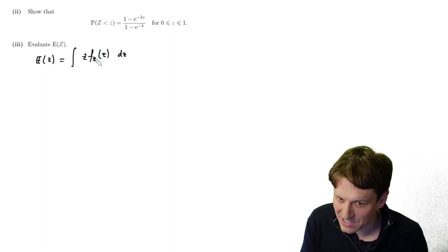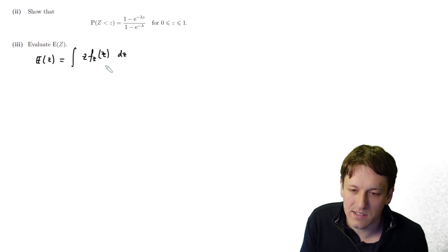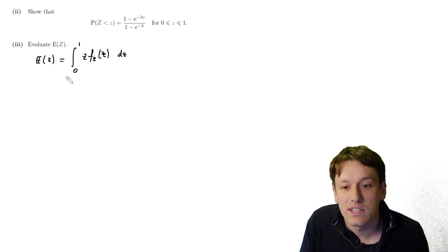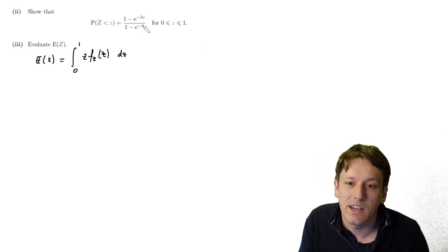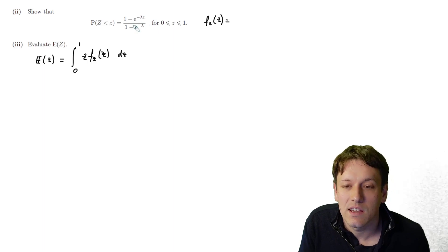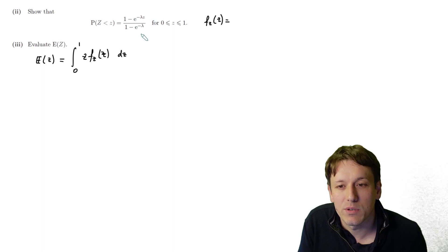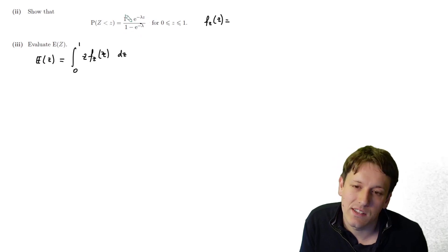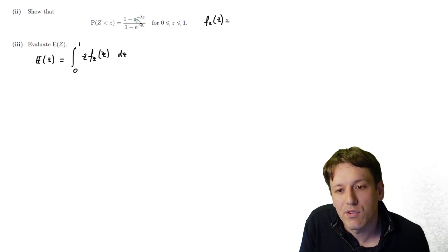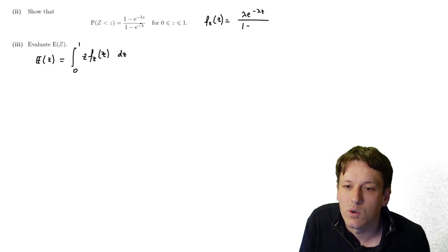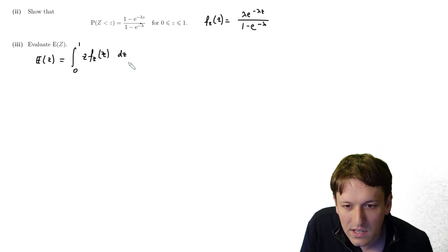The PDF f_Z(z) is obtained by differentiating the CDF from part two. The denominator (1 − e^(−λ)) is a constant, so differentiating (1 − e^(−λz)) gives λe^(−λz). Hence f_Z(z) = λe^(−λz)/(1 − e^(−λ)). So the expectation becomes the integral from 0 to 1 of z · λe^(−λz)/(1 − e^(−λ)) dz.